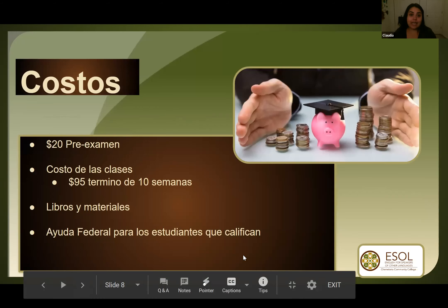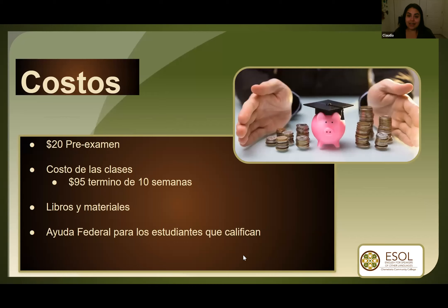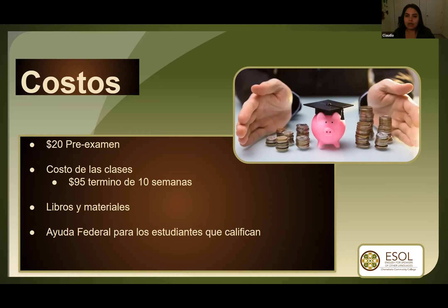Costos. El examen CASAS cuesta $20. Como para el otoño no vamos a tener ese examen, esos $20 no les vamos a cobrar. El costo de las clases cuesta $95 cada término. Esto no incluye los libros y materiales que tal vez necesitas para tu clase. Si necesitas libros, cuestan como entre $20 y $40.